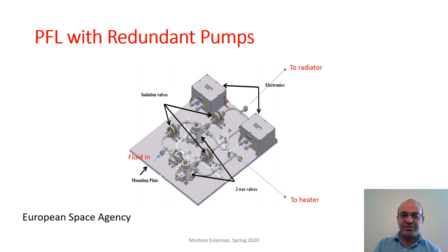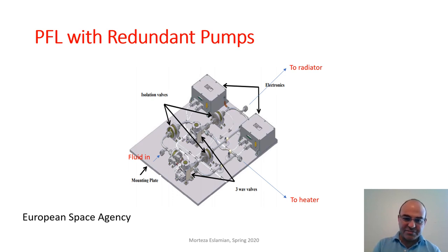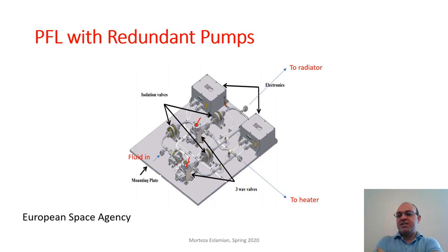This is a schematic of a pumped fluid loop with redundant pumps from the European Space Agency. Most of the components we discussed are shown here. The fluid that has already passed through the electronics comes to the pump area, where we have two pumps for redundancy to improve system reliability. Usually one pump is active and the other is a backup not in use unless needed.